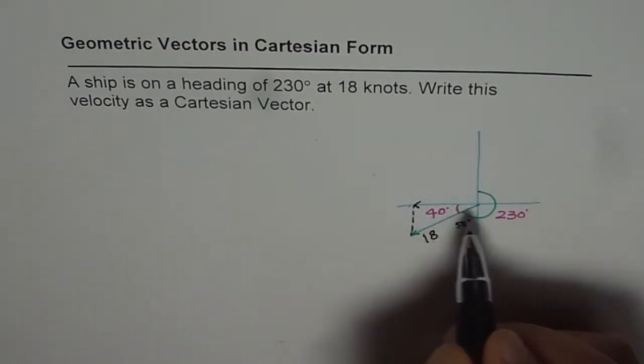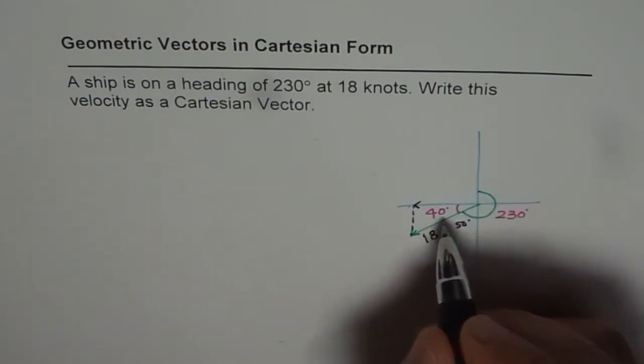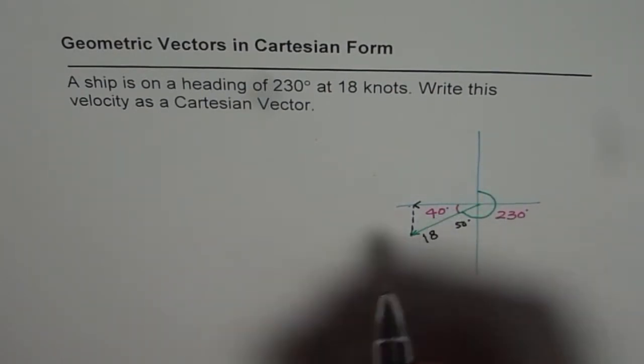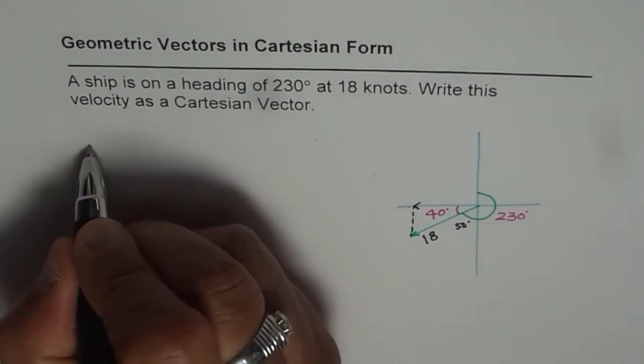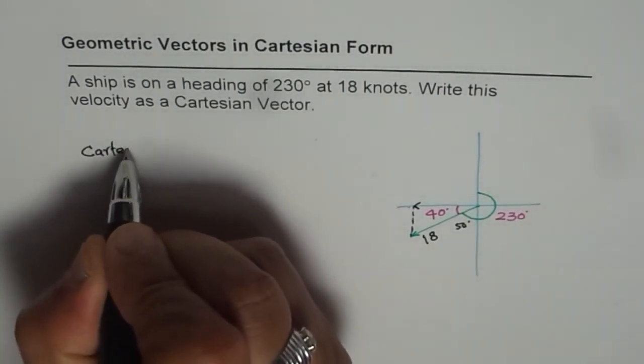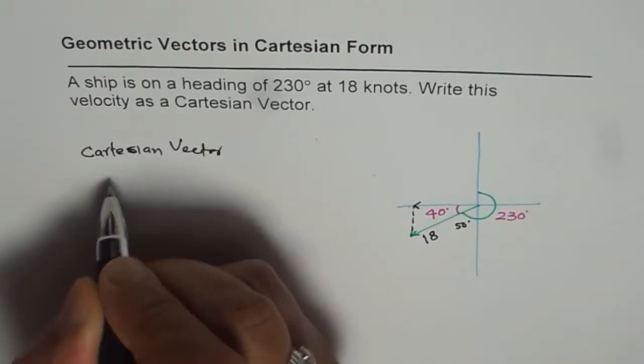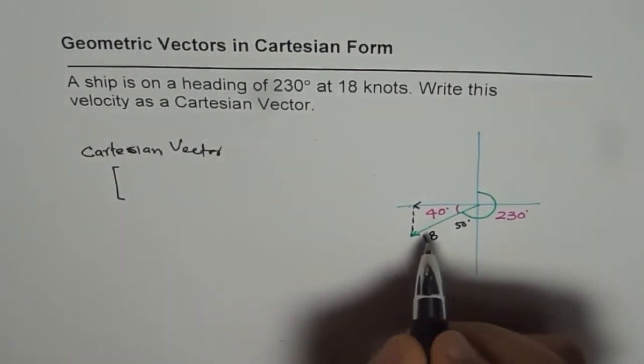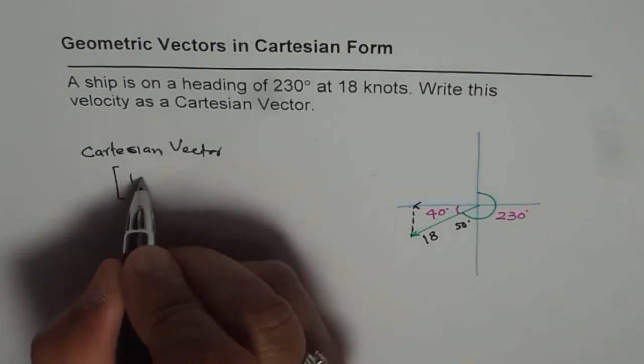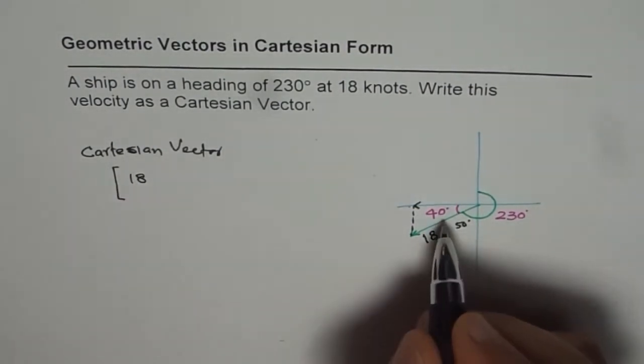So along the horizontal, we will have 18 cos of 40 degrees. So the Cartesian vector will be, along the horizontal, it will be 18 cos of 40.